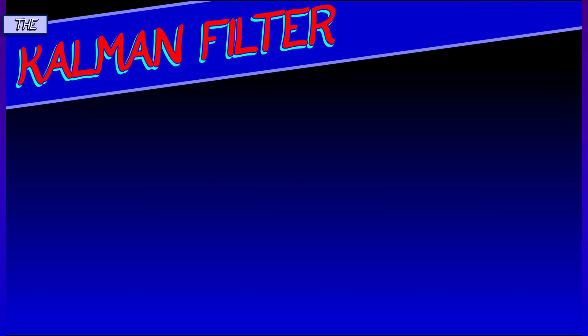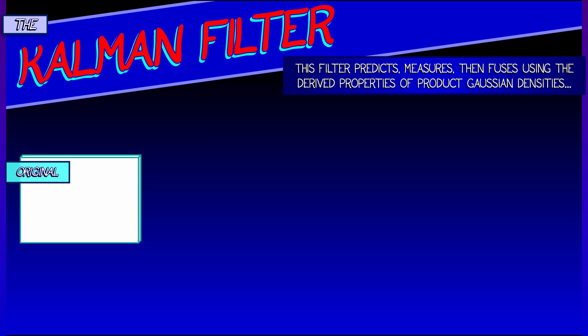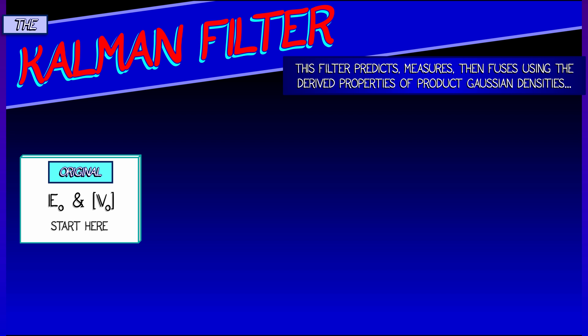Again, the Kalman filter predicts, then measures, then fuses, using the special properties of Gaussian densities. So we start off with an expectation and a covariance matrix, E naught and V naught.